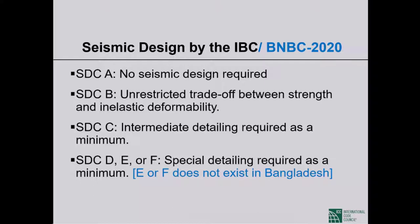In general, going for a higher R with more complicated detailing is a more expensive proposition — it doesn't pay off. In seismic design category C, the minimum detailing required is intermediate; you cannot choose an ordinary moment frame with R=3. Your choices in SDC C are an intermediate moment frame with R=5 or a special moment frame with R=8, and the intermediate solution is typically more economical.